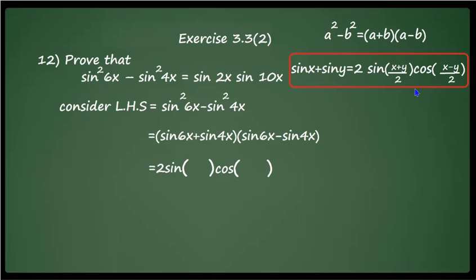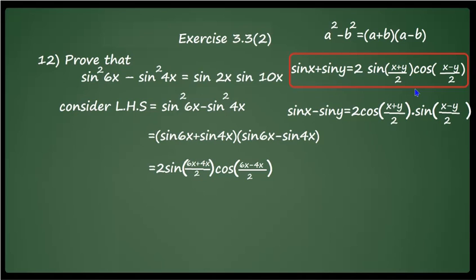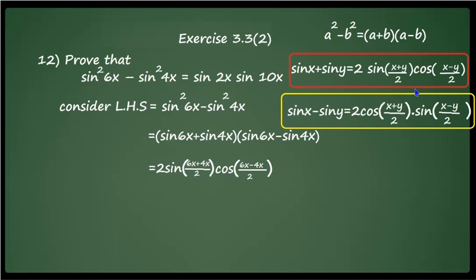Here x is 6x and y is 4x, so we get 2 sin((6x+4x)/2) · cos((6x−4x)/2). Similarly, apply the sin x − sin y formula to the second factor sin 6x − sin 4x. The formula is sin x − sin y = 2 cos((x+y)/2) · sin((x−y)/2). With x = 6x and y = 4x, this becomes 2 cos((6x+4x)/2) · sin((6x−4x)/2).